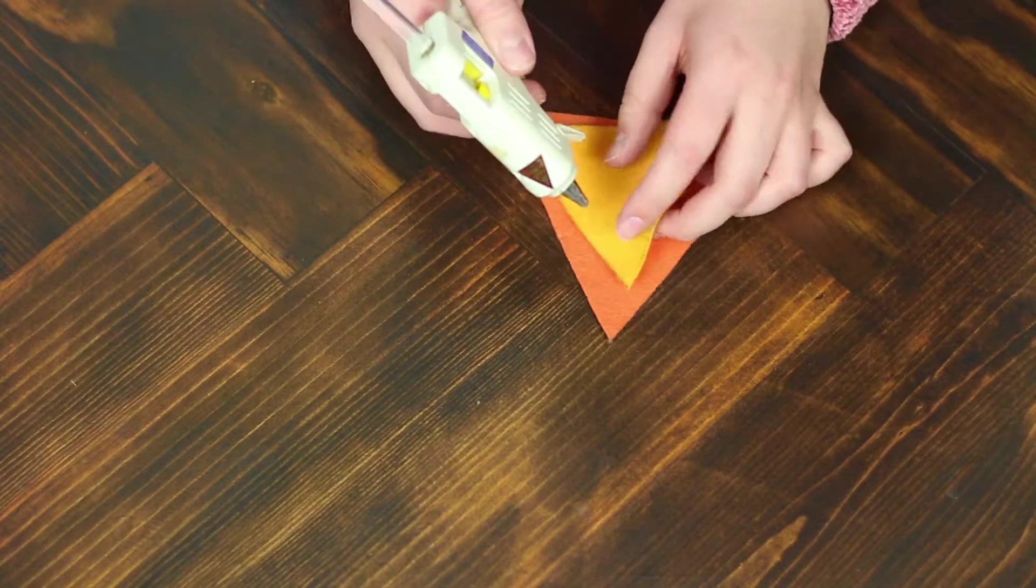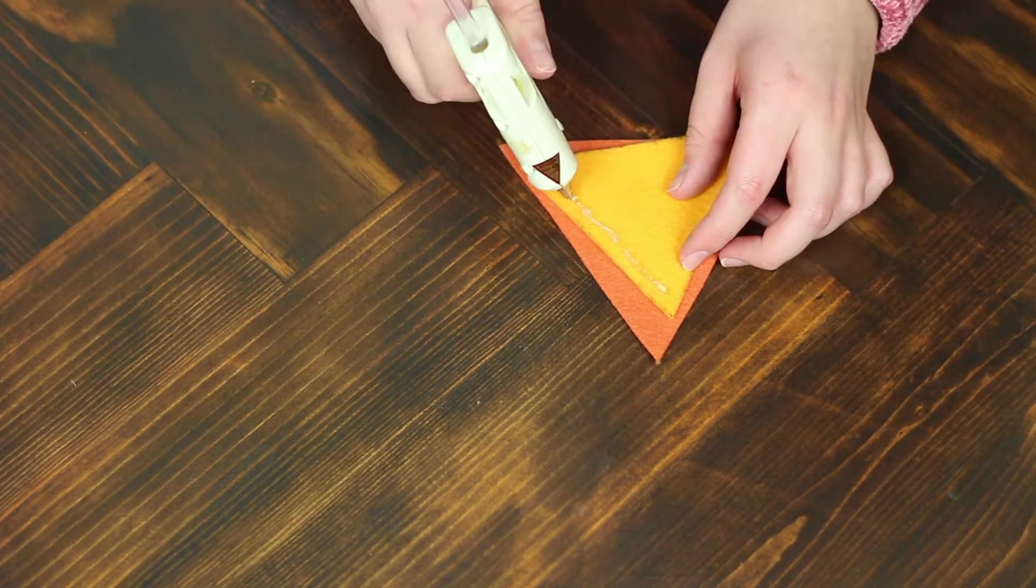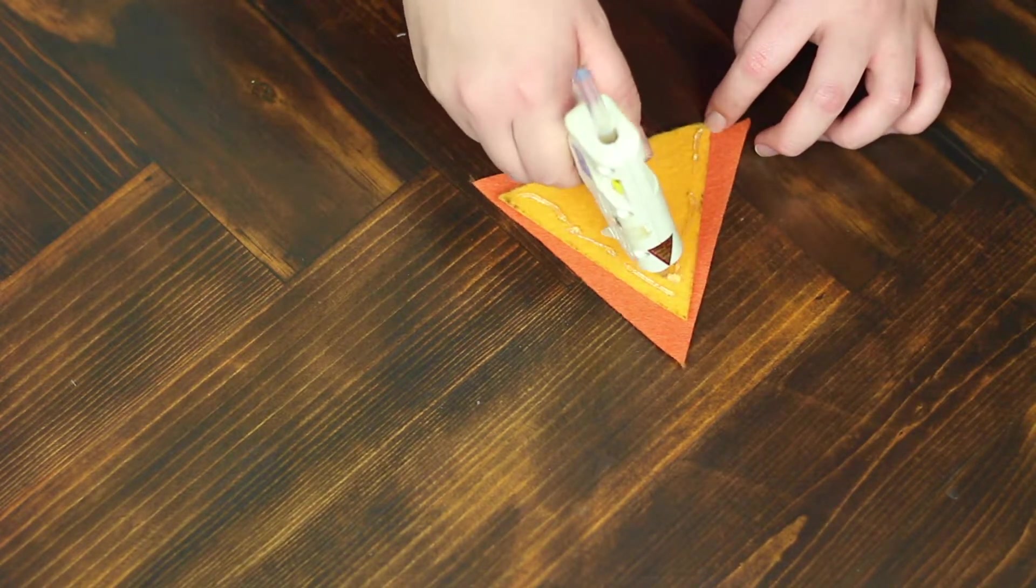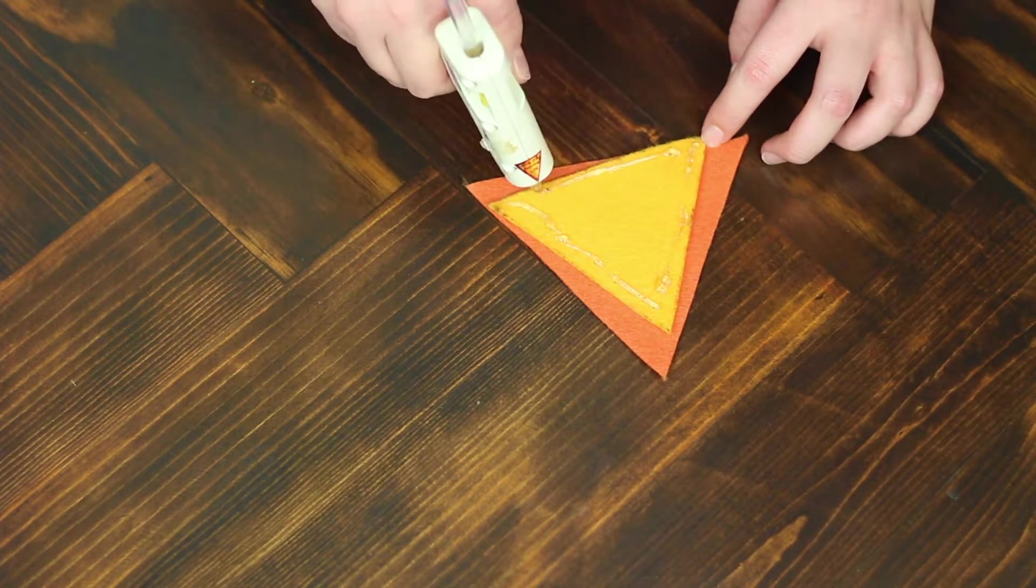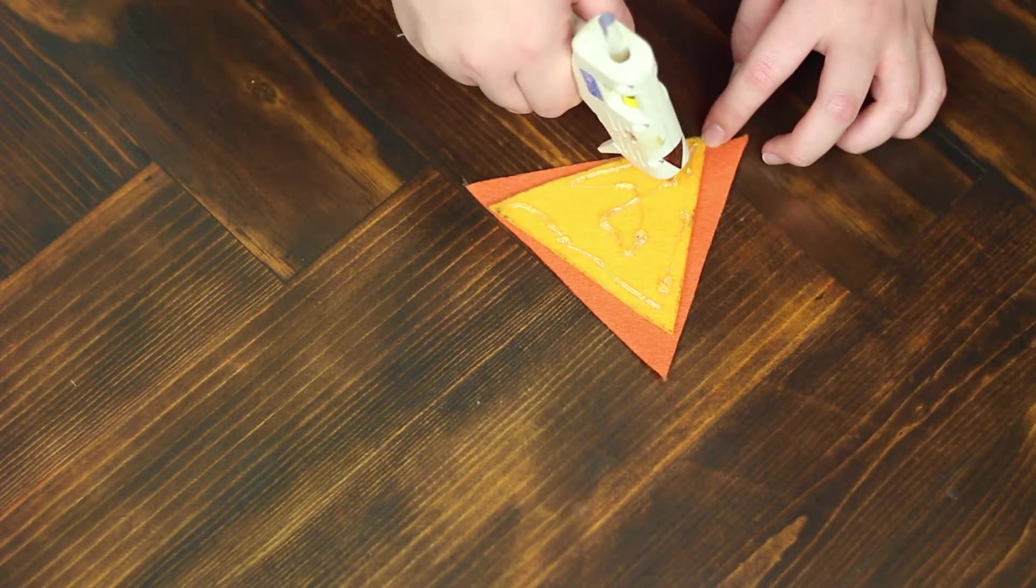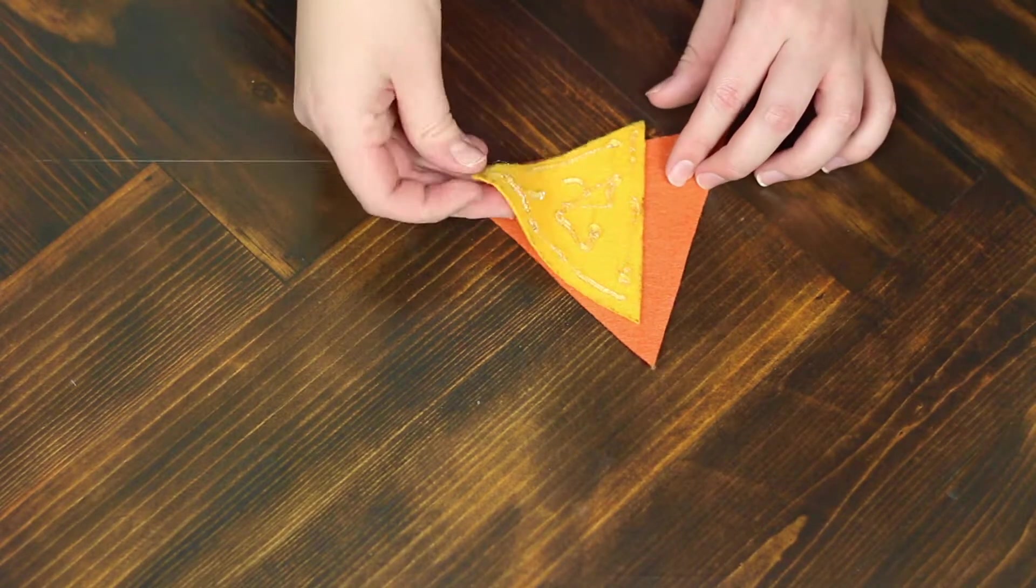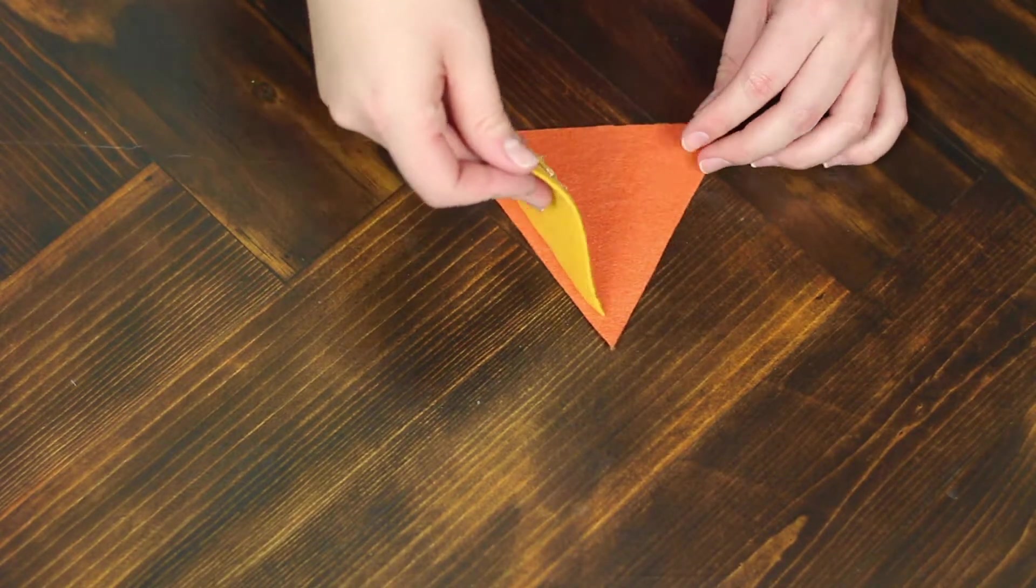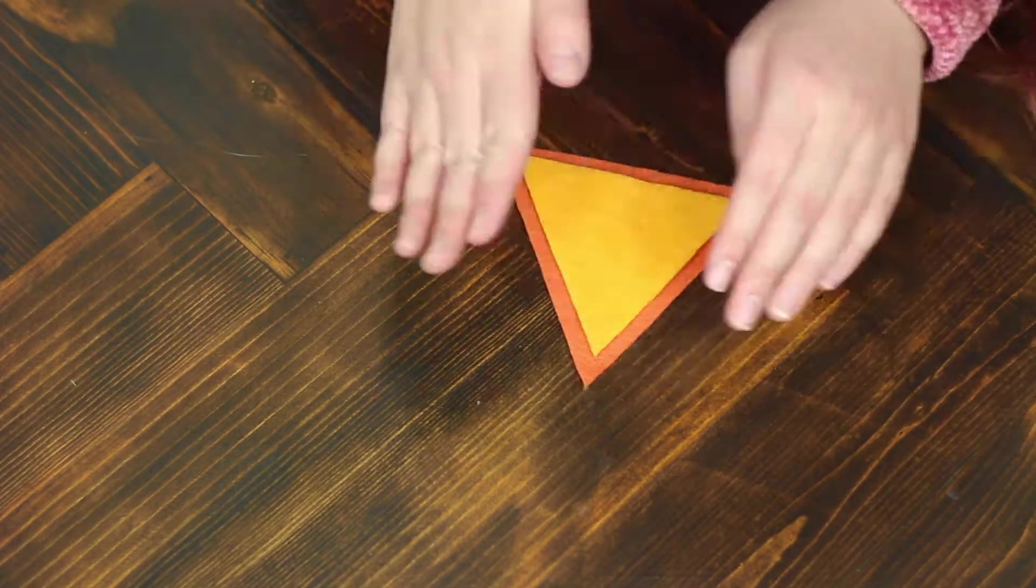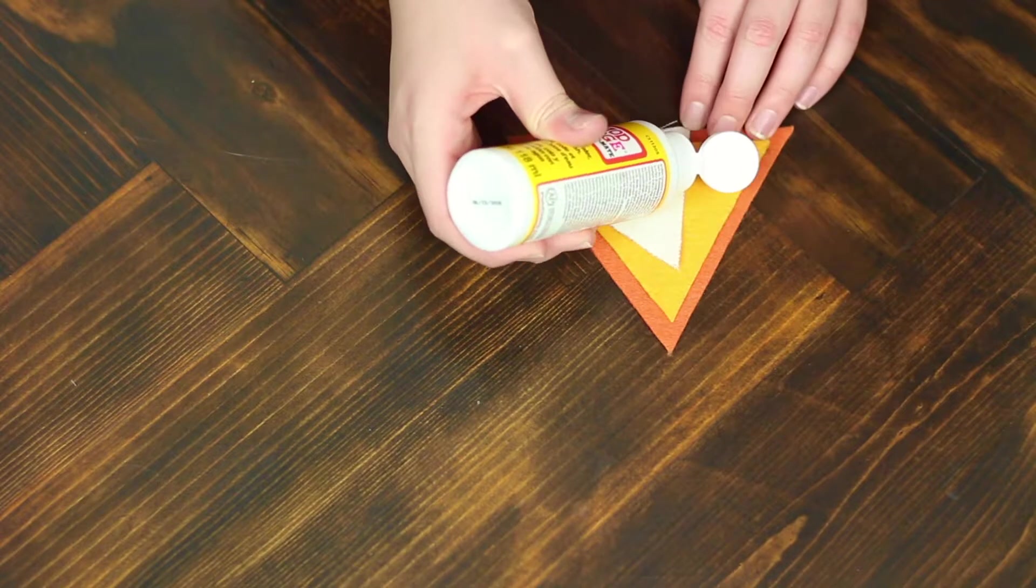I found using a hot glue gun to glue the felt pieces together was the easiest. I tried using Mod Podge and fabric glue and it just didn't work as well. Eventually the triangles came apart. Hot glue guns are just a sure shot that they're going to stay together for a long time. Just make sure you smash them together for a while until it's dry. You can even roll the twine over it which I found helped.